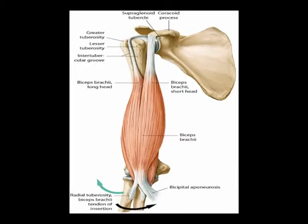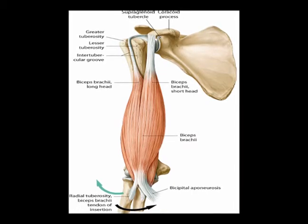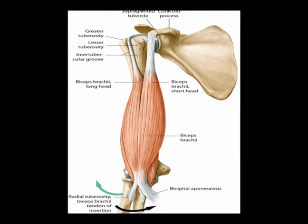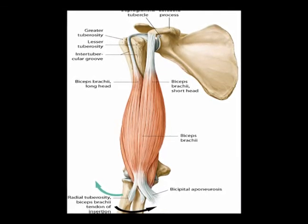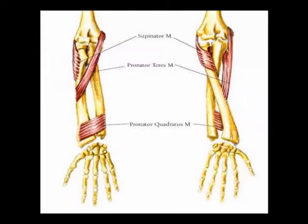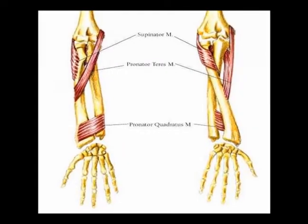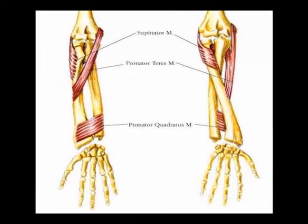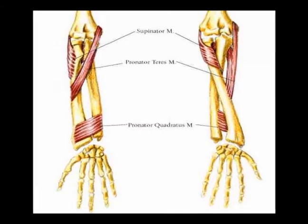The concentric action of the supinator muscle is forearm supination. It works along with the biceps brachii to perform forearm supination, and the opposing muscle is the pronator teres.